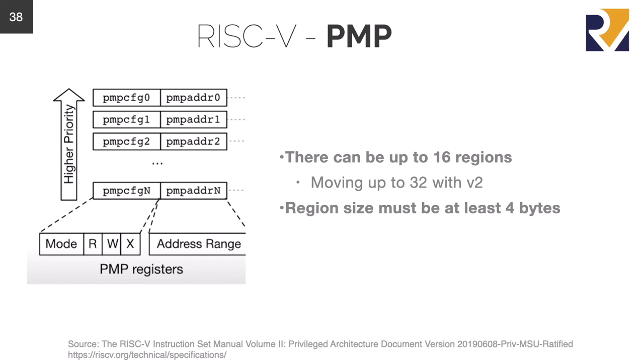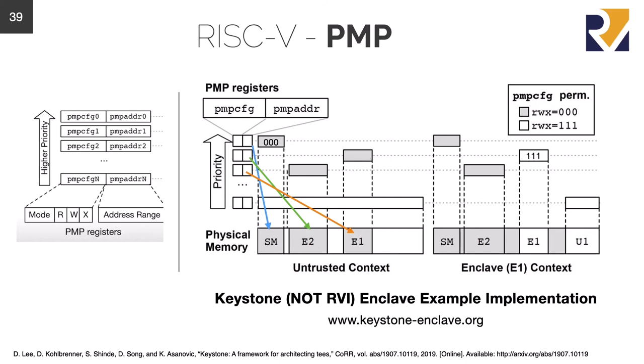To set up PMP, a number of configuration registers must be set. These registers contain the mode — which we'll look at in a moment — the access rights (read, write, and execute), and the address range over which the permissions will be applied. This slide shows one possible implementation of a set of PMP configurations. On the left is the configuration registers and address ranges diagram; on the right is a Keystone Enclave example — not a native RISC-V example, but one the Keystone team uses to illustrate the concept, with the paper linked below.